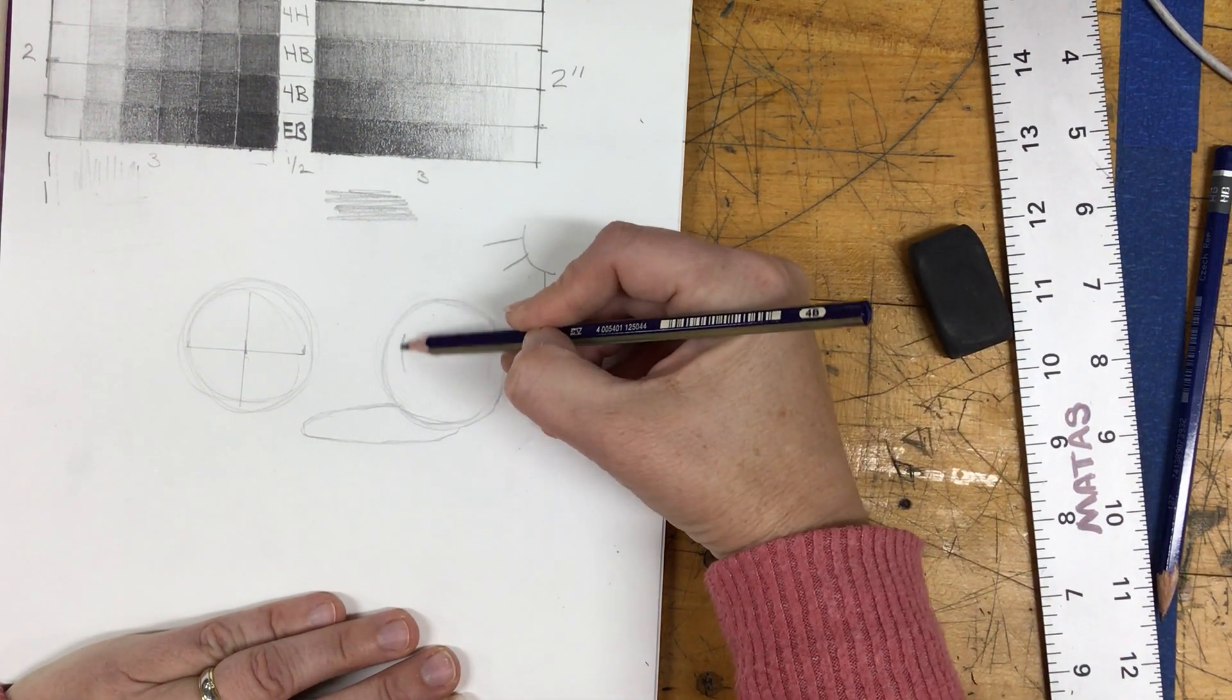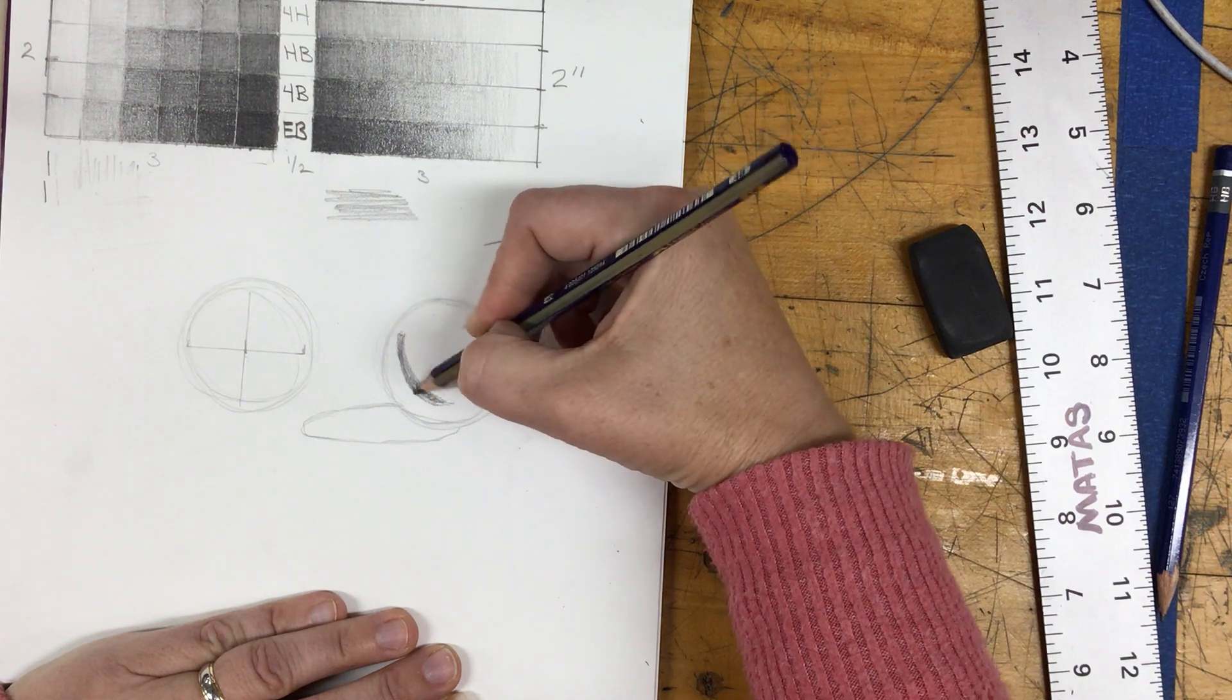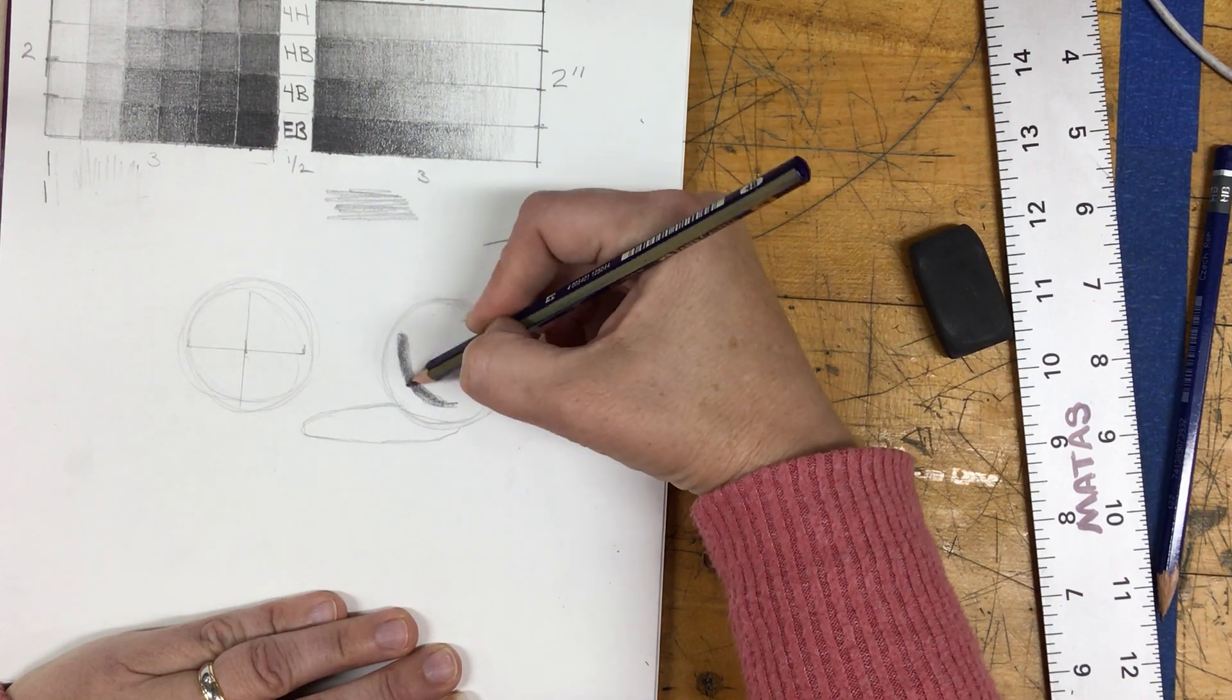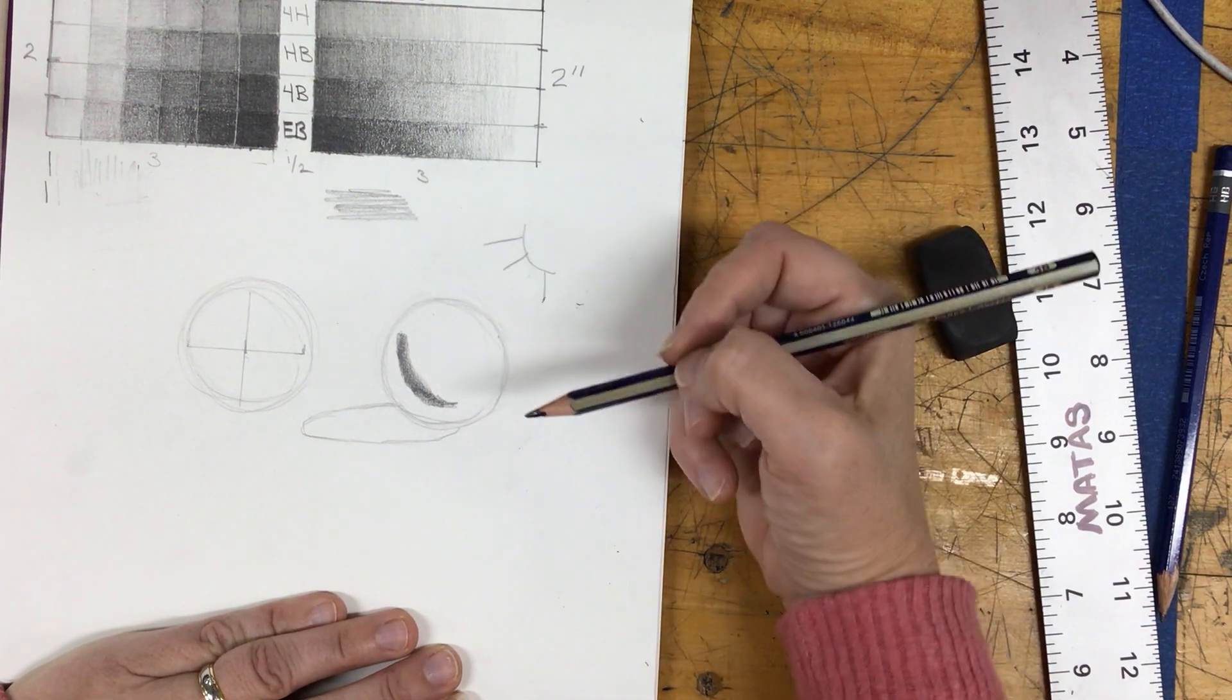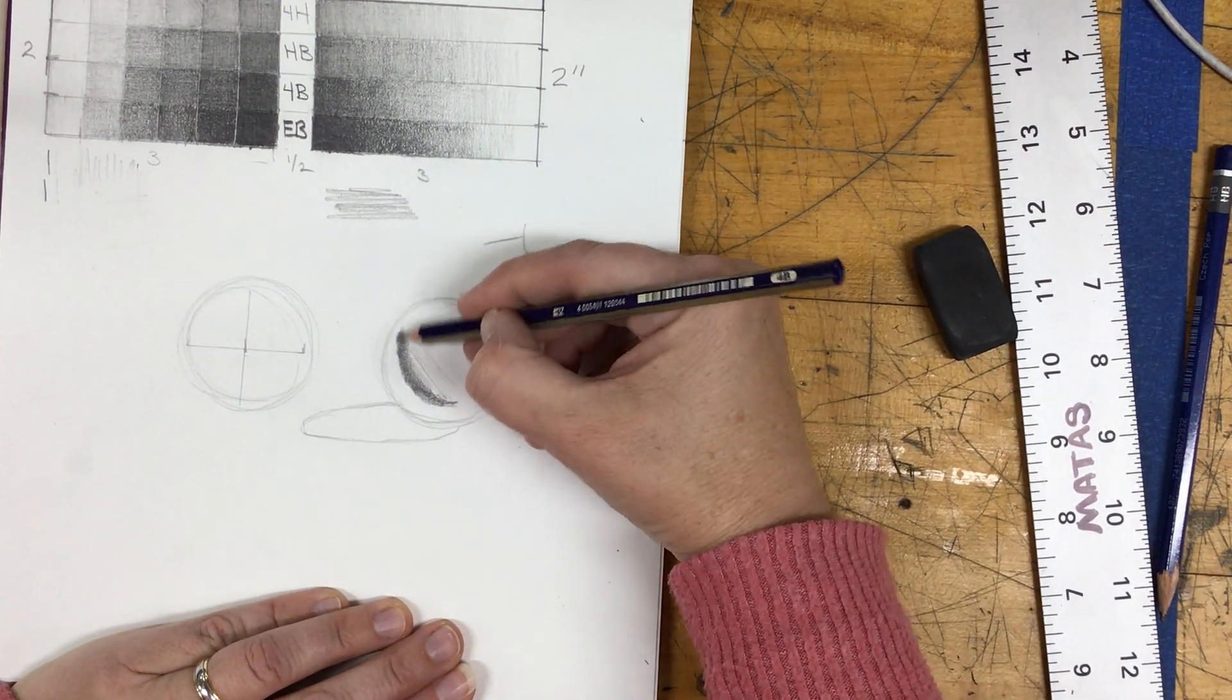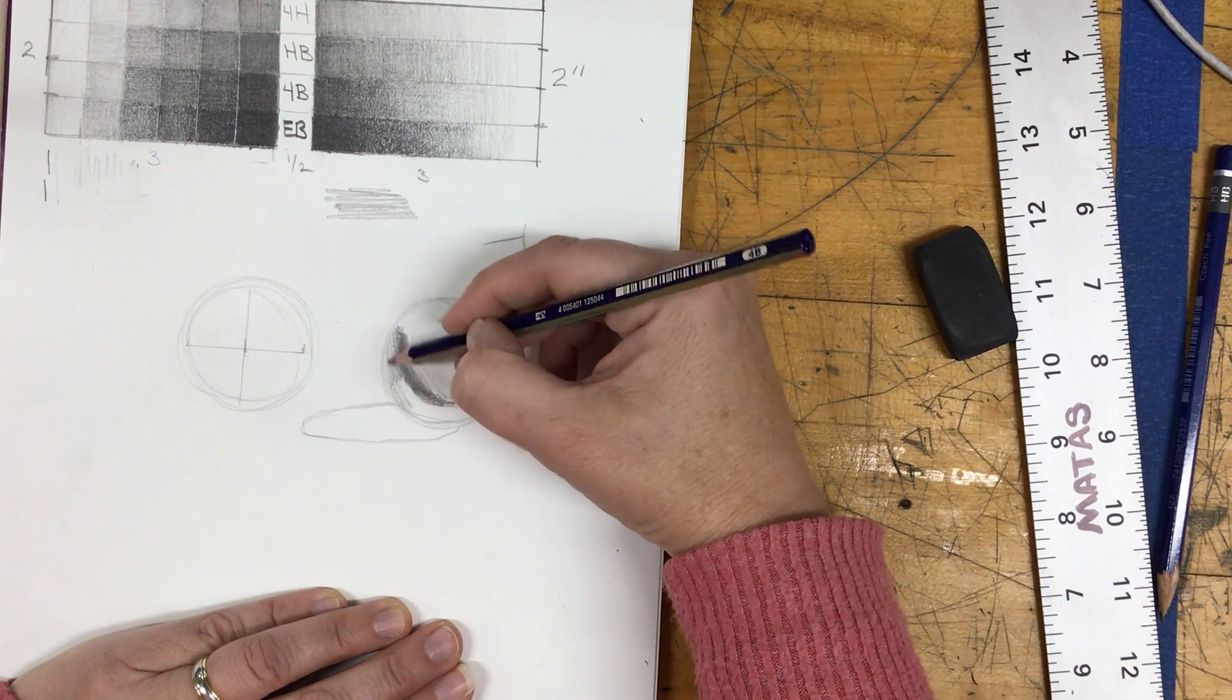So over on this side, I'm going to start with my shadow and the shadow on the object is going to be your darkest value. Now, when I'm shading, you're probably noticing that I'm using a curved line, because the object is curved. If I just shaded with a straight line, it might look kind of flat. So I'm going to shade with a curved line. And then as it moves to the edge, I'm going to let it get a little bit lighter on the bottom edge of this sphere.